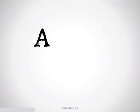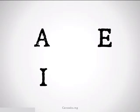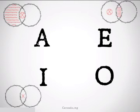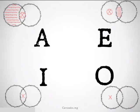To set up our square, we're going to place our A proposition in the top left corner, our E proposition in the top right, I in the bottom left, and O in the bottom right. We'll draw our Venn diagrams so we know what we're talking about and have that to fall back on if we get confused.